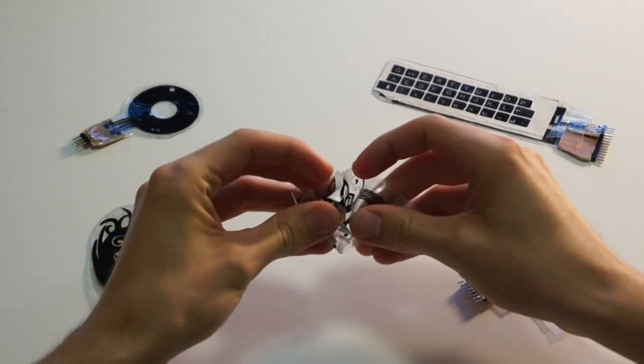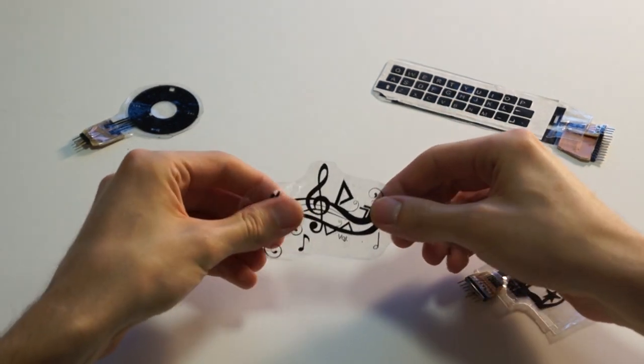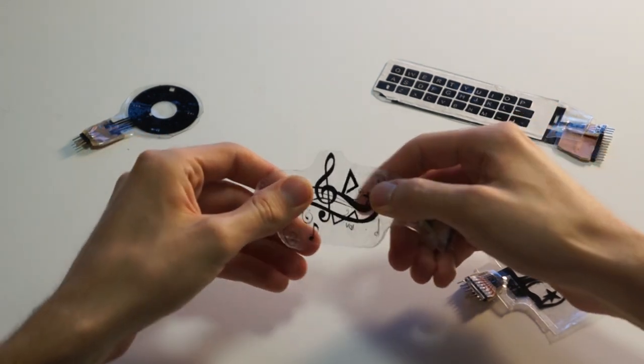iSkin can be produced in different shapes and sizes to suit different locations on the body. Moreover, it is visually customizable.